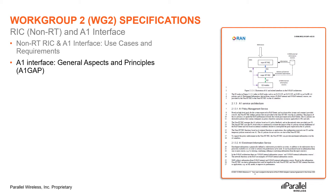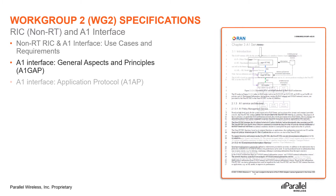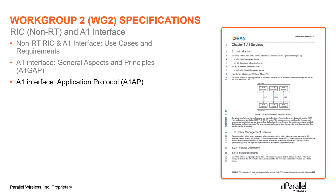Then there are four technical specifications looking at the A1 interface: General Aspects and Principles, Transport Protocol, Application Protocol, and Type Definitions. The General Aspects and Principles document specifies the general aspects and principles of the A1 interface. The Application Protocol document specifies the application protocol of the A1 interface. An important point to note with this particular specification is that if the version numbers are different for the near-RT and non-RT-RIC, there may be implications for compatibility.